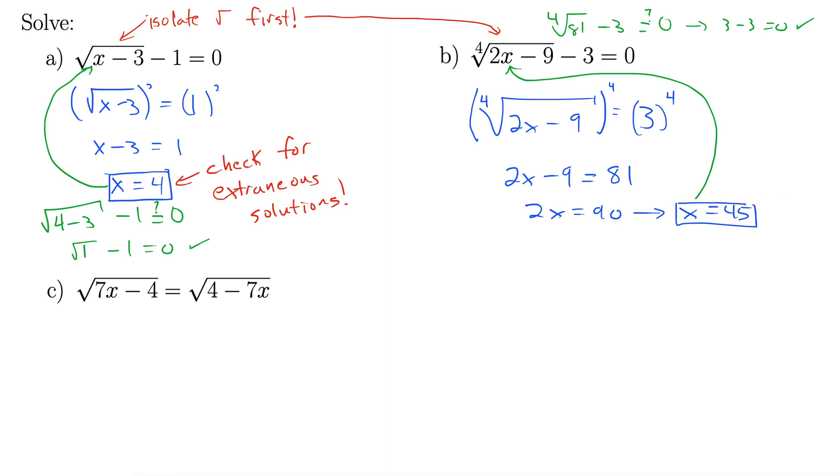Part C is a little different. We have square root of 7x minus 4 equals square root of 4 minus 7x. When we have a square root on both sides like this, we simply square both sides. Right, so I'm going to just take this, square both sides. That's going to get rid of both those square roots, leaving us with 7x minus 4 equals 4 minus 7x.